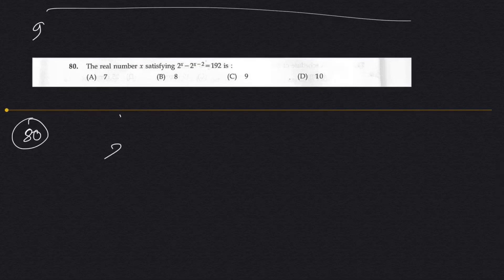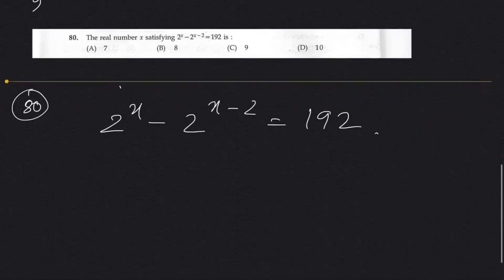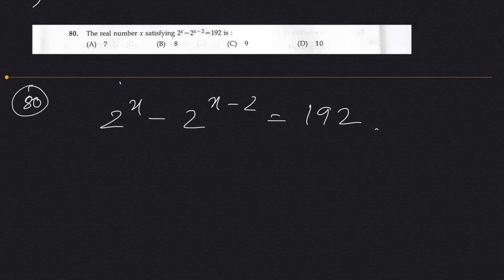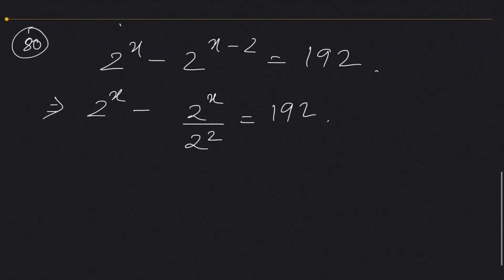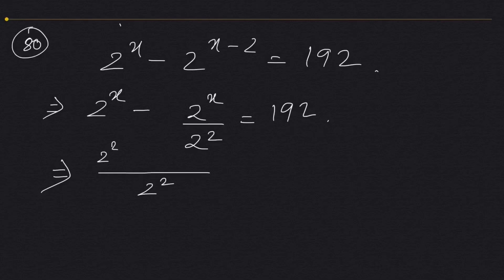The real number x satisfying 2^x − 2^(x−2) = 192 is what? We can factor this. We take 2^x as a common factor. 2^(x−2) can be written as 2^x divided by 2², so we factor out 2^x from the expression.